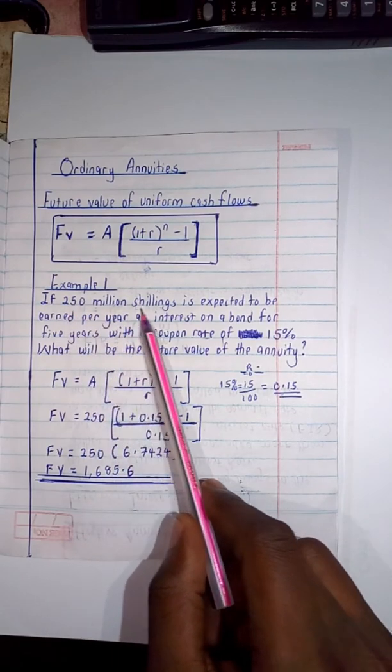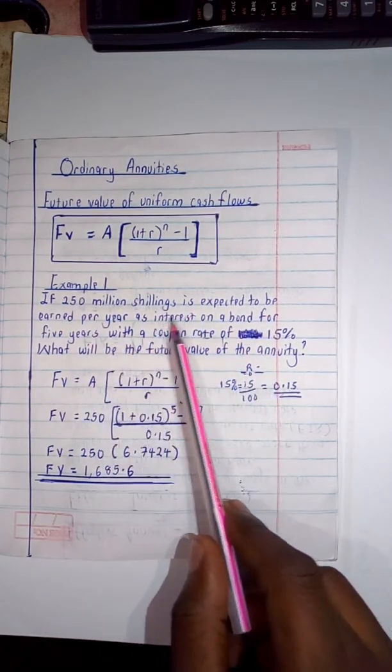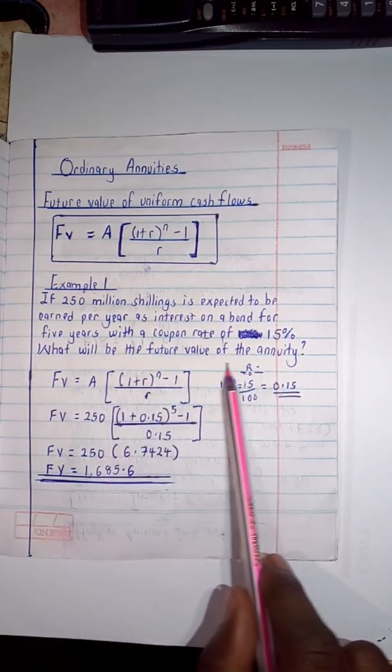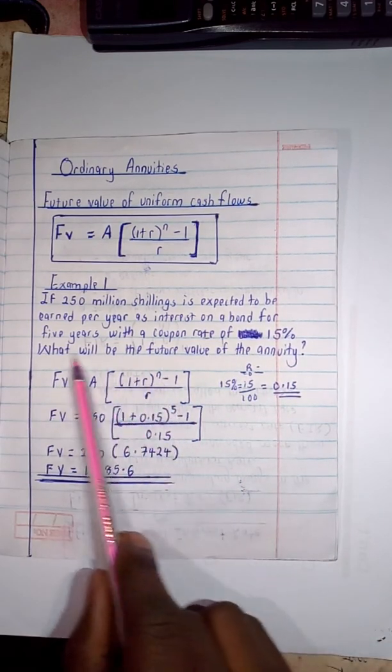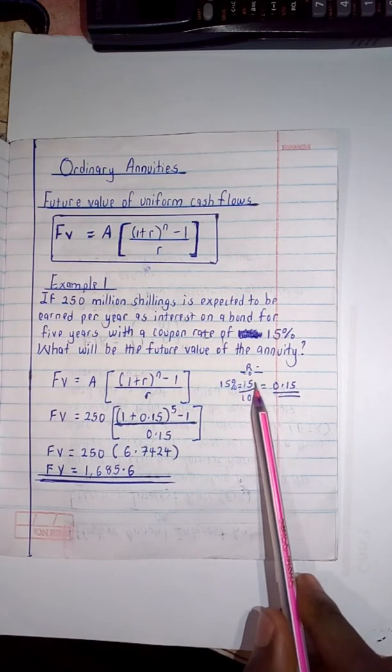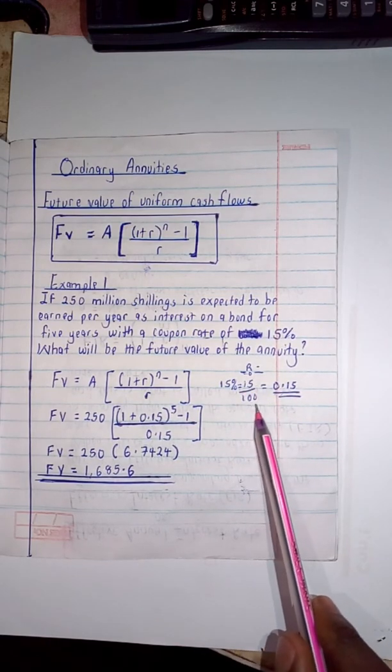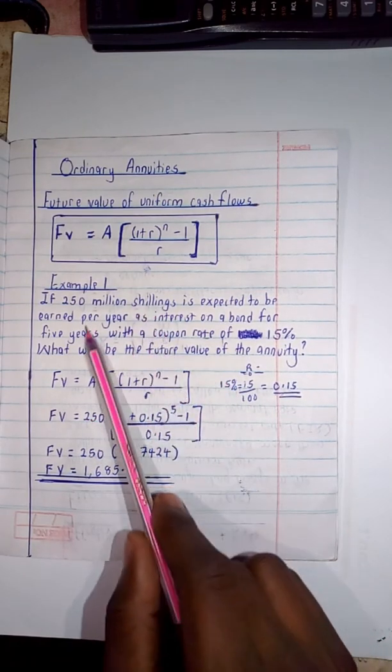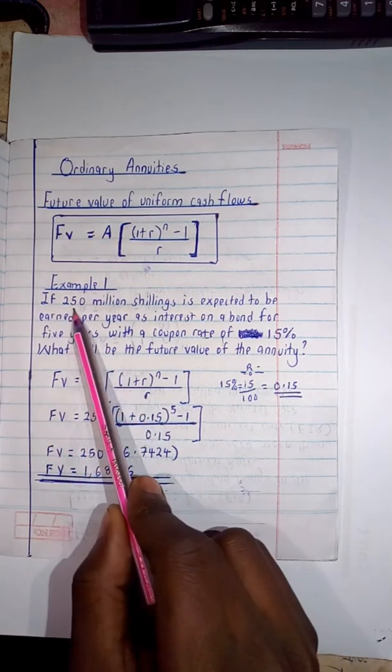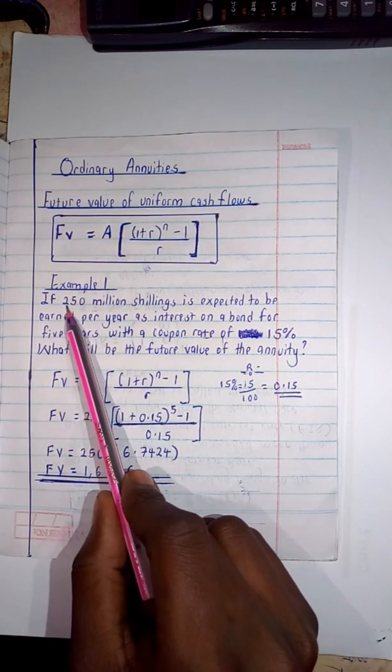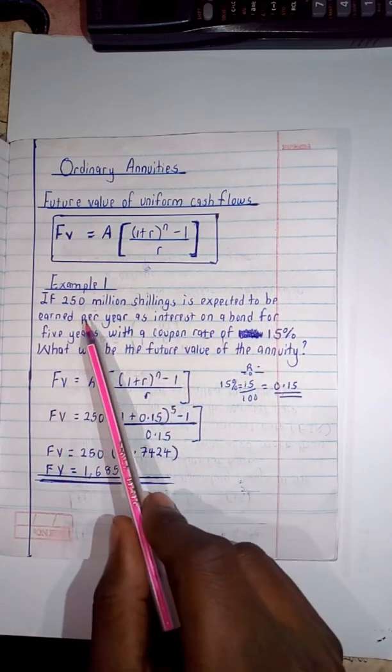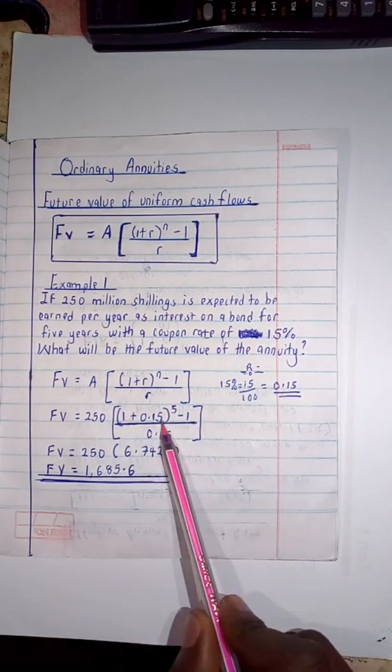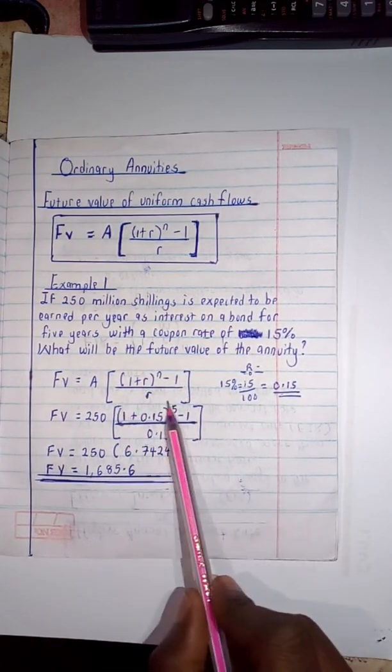If 250 million shillings is expected to be earned per year as interest on a bond for five years with a coupon rate of 15 percent, what will be the future value of the annuity? Now with this, applying my formula here, I first deal with my rate which I changed to decimal: 15 divided by 100 giving me 0.15. So after that I start substituting by getting out the vital information. What's my annuity? My annuity is 250 which is expected every year, so meaning it's going to be my annuity, and this is going to be my rate.